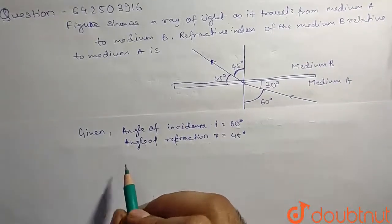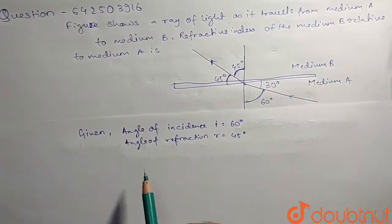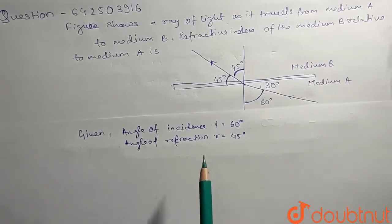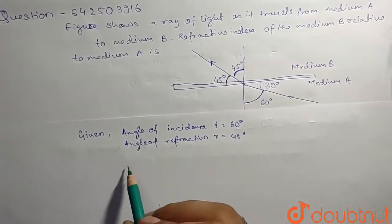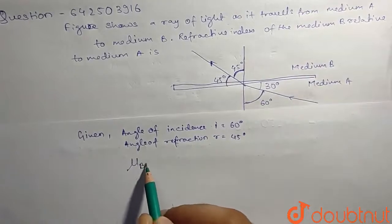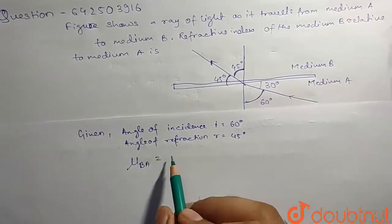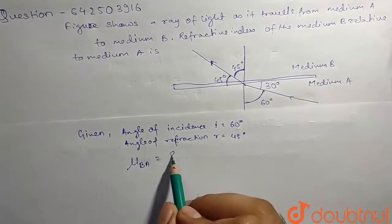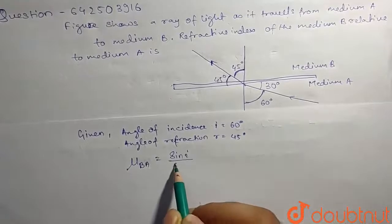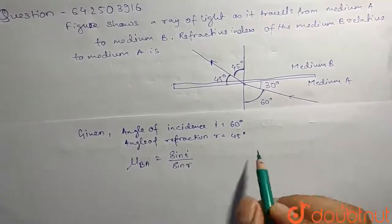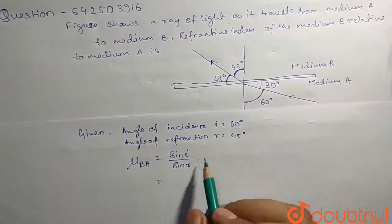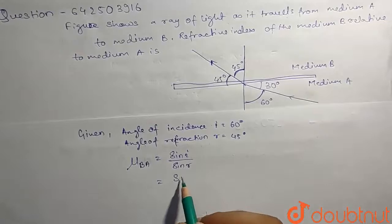Now we know that refractive index from medium A to B is μ_BA. We also know its formula is sin i by sin r, and we'll put the values of i and r.